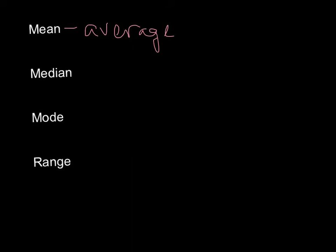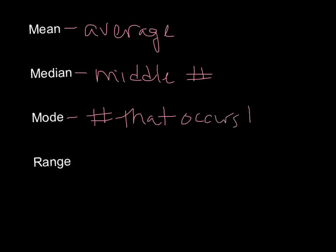Median is your middle number. Think of median in the road. Mode is the number that occurs the most. And range is your highest number, or your largest number, minus your lowest or smallest number.